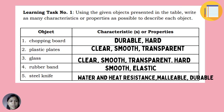These are the correct answers. Chopping board: durable and hard. Plastic plates: clear, smooth, and transparent. Glass: clear, smooth, transparent, and hard. Rubber band: smooth and elastic. Steel knife: water and heat resistance, malleable, and durable.